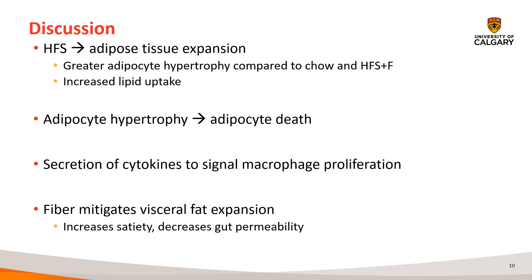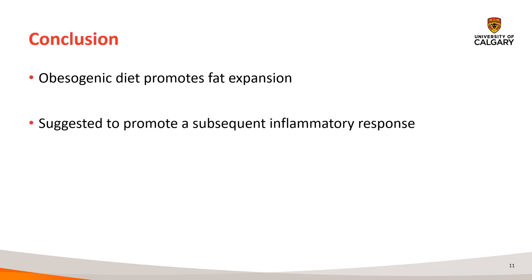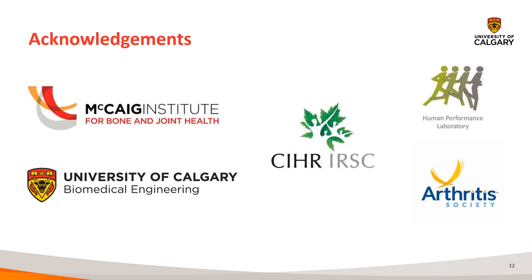This can be attributed to fiber's ability to increase satiety and decrease gut permeability. In conclusion, an obesogenic diet was able to promote fat expansion, which is suggested to promote a subsequent inflammatory response. Based on these preliminary results, fiber may be used as a preventative measure. Thank you.